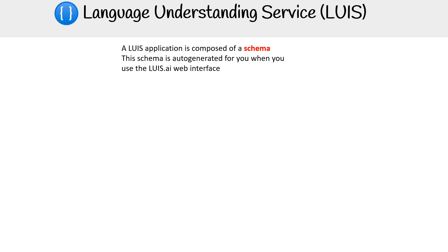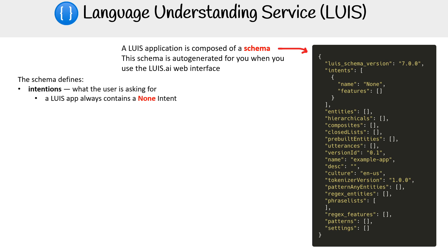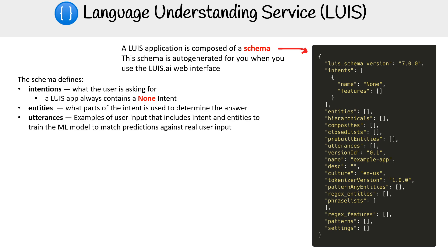The LUIS application is composed of a schema, and the schema is auto-generated for you when you use the LUIS AI web interface. So you definitely aren't going to be writing this by hand, but it helps to see what's in there. If you have some programmatic skills, you can obviously make better use of the service than just the web interface. The schema defines intention — what the users are asking for. A LUIS app always contains a none intent, and entities — what parts of the intent are used to determine the answer.